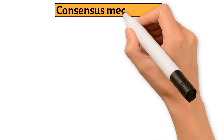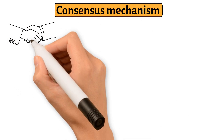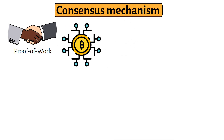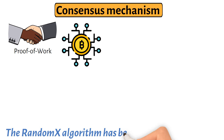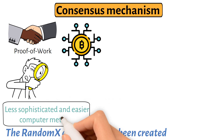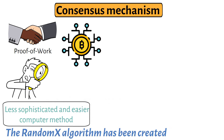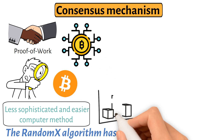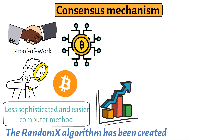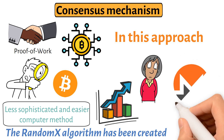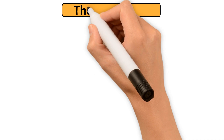Monero employs a proof-of-work consensus process, just like the Bitcoin blockchain. In particular, the RandomX algorithm has been created. The reasoning for it is that it requires a less sophisticated and simpler computing method. Therefore, as with Bitcoin, those with ASIC technology optimized for mining won't gain a large edge. In this approach, those with less capacity can participate in Monero mining as well.